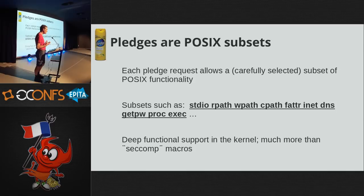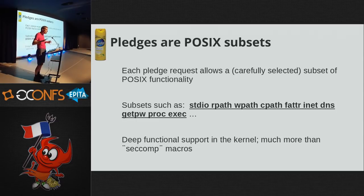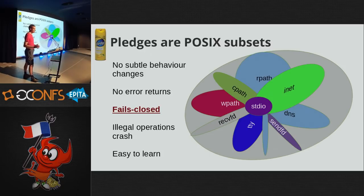The pledge subsets sound a bit hokey, but the entire idea is to create a high-level understanding among the development community of what parts of Unix they're actually using. Subsets include: stdio - the ability to read and write; path - reading or writing a path; file attribute changes; inet - opening and managing sockets; dns - we've separated DNS out from regular sockets; proc - allowing fork; and exec. Proc isn't called 'fork' because it gives you a bit more things you usually use when spawning a process. Some tricky bits are handled in the kernel to make sure libc is happy and to remove warts and weird things Unix does so developers don't have to think about them directly.